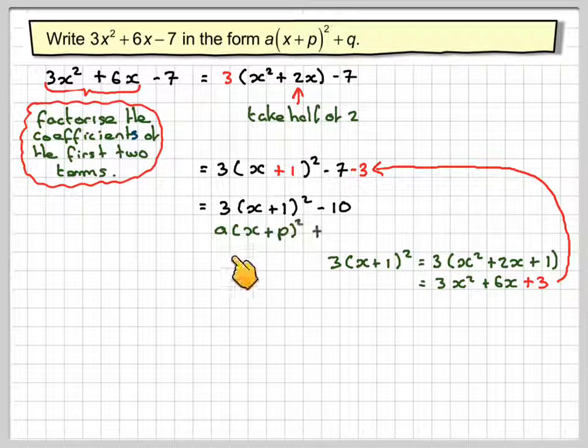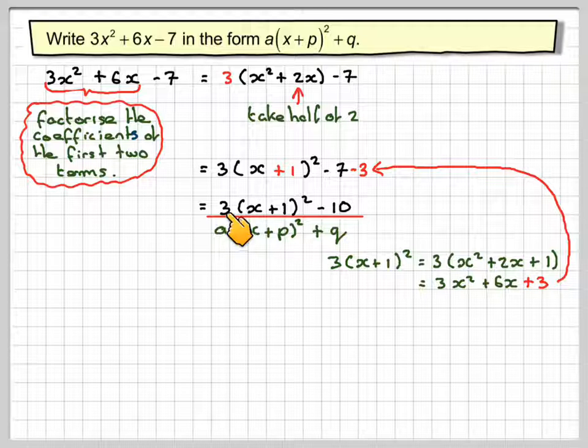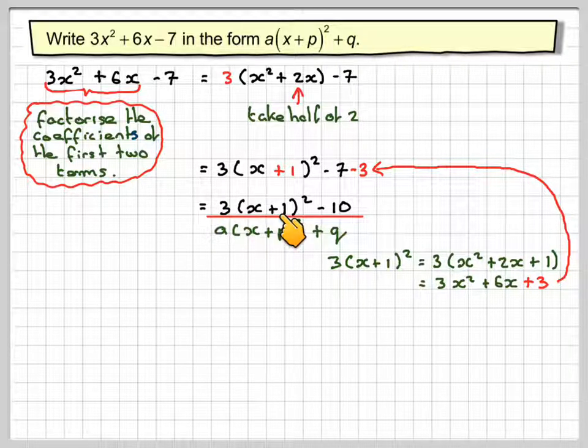That's now in the form of a(x + p)² + q. a would be equal to 3 in this case, p would be equal to 1 and q would be equal to -10.